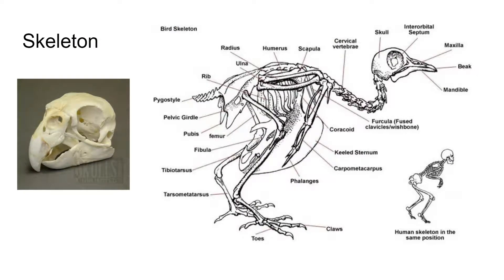The skeleton is fully ossified and has air cavities — birds have hollow bones, which allows them to fly by reducing weight. Their skull bones are fused; they have a single occipital condyle, giving them a wide range of motion in their heads. They have a diapsid skull, which is what you see in most modern reptiles. Each jaw is covered with a keratinized sheath that forms what we know as the beak. Most birds have no teeth; the beak serves that function for them.